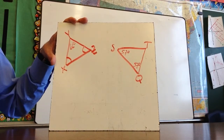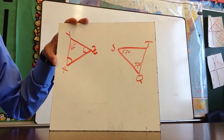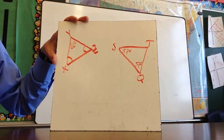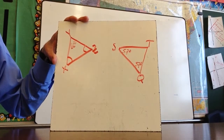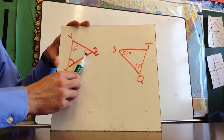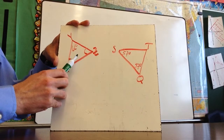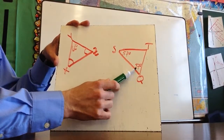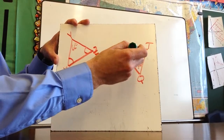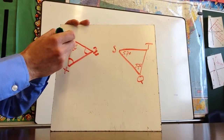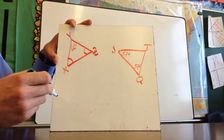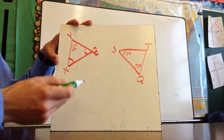Looking at this example problem, we're going to try to figure out if these two triangles are in fact similar. The way we want to do this: we know that angles X and Z would have to be equal. We know that S and Q are currently equal, so we can either figure out if angle T is congruent to angle Y, or we can determine the angles of X and Z.